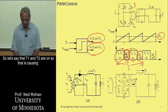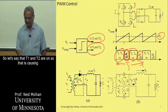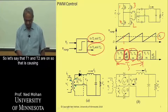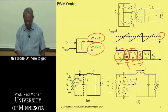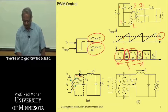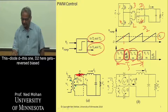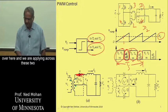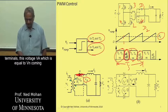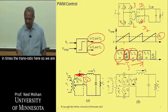So let's say that T1 and T2 are on. So that is causing this diode D1 here to get forward biased. This diode D2 here gets reverse biased over here.